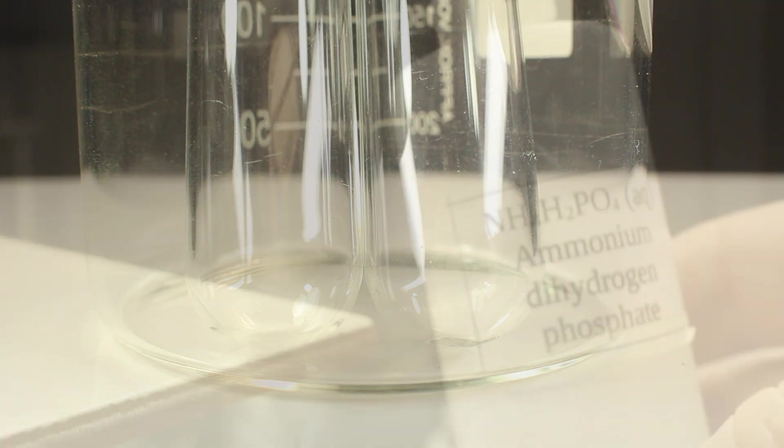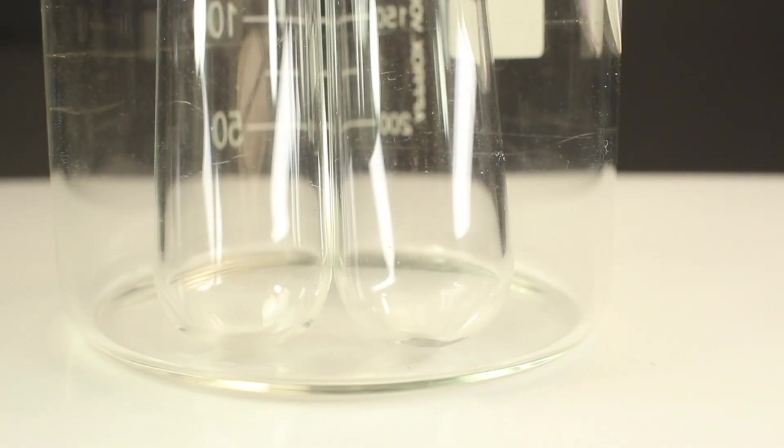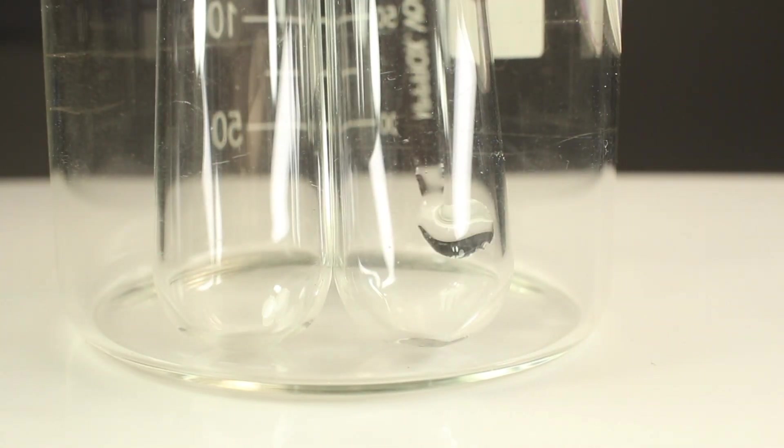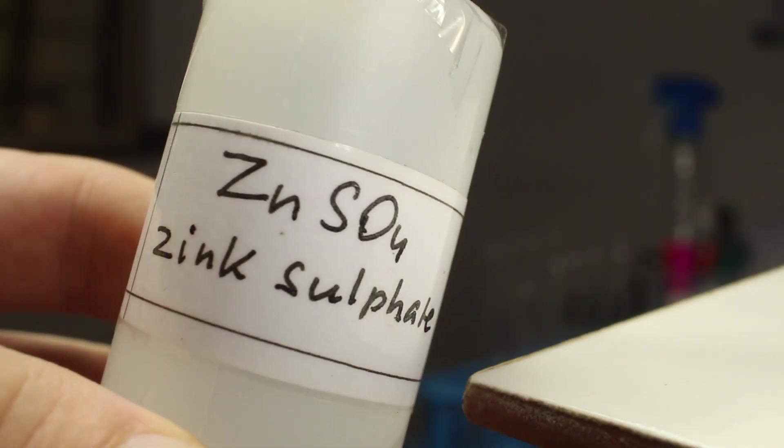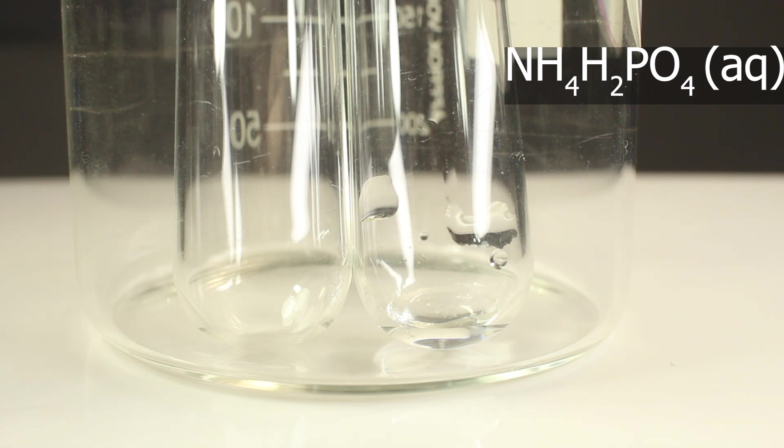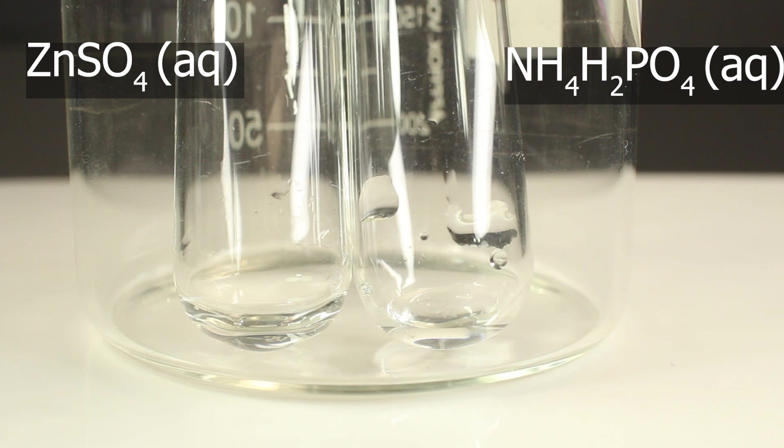Here I use ammonium dihydrogen phosphate. You can use hydrogen phosphate anyway, phosphates are going to be protonated in solution. And as a control I use zinc sulfate. Sulfates are also stable. They don't react with concentrated or dilute sulfuric acid.